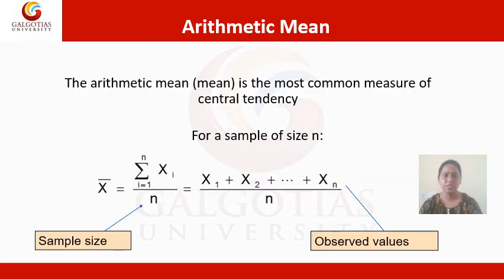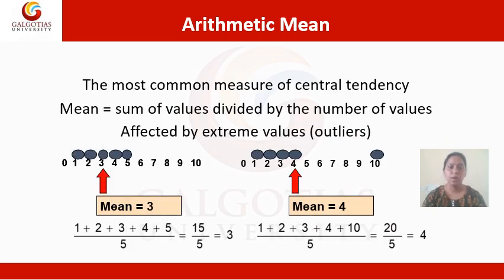The first type of central tendency is arithmetic mean. Arithmetic mean, also referred to simply as the mean, is the most common measure of central tendency. It is represented by x-bar. The formula is x-bar equals the sum of observed values (x1 + x2 + ... + xn) divided by n, the sample size or number of observations.